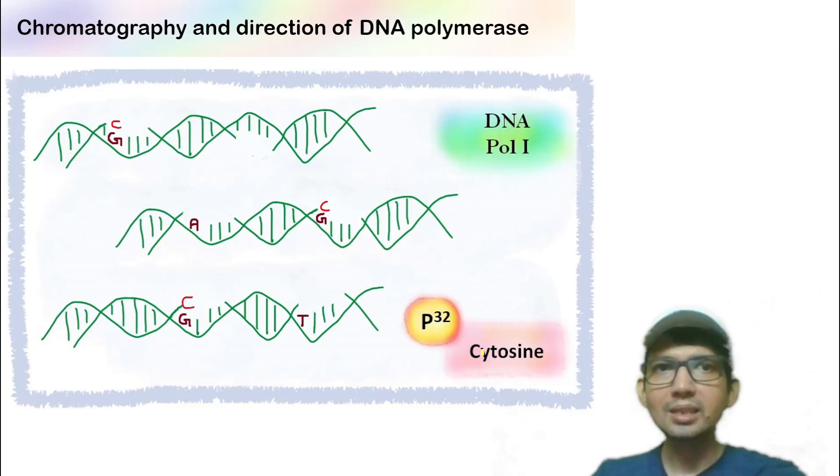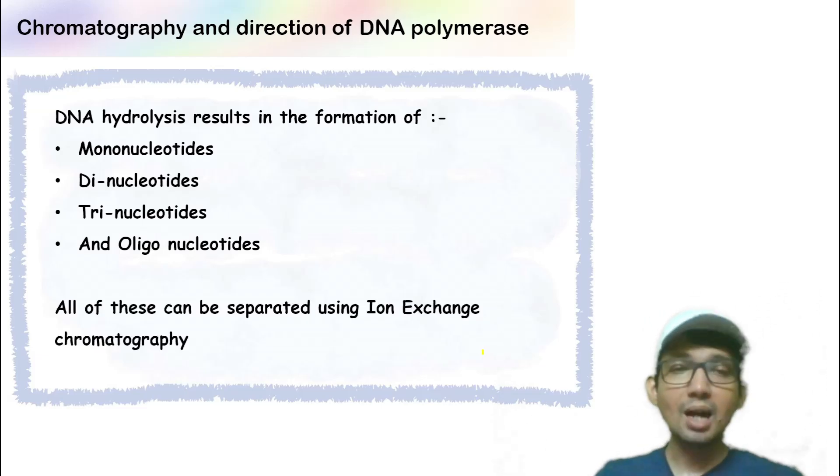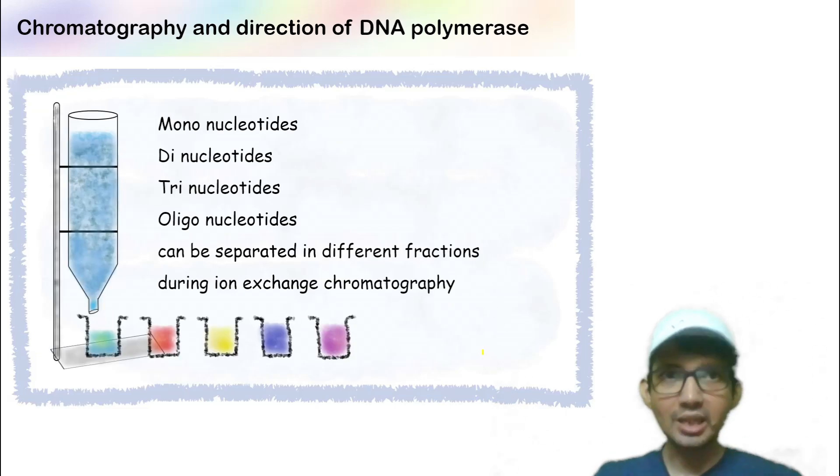Once cytosine is allowed to be added, the DNA is hydrolyzed. The DNA hydrolysis results in formation of mononucleotides, dinucleotides, trinucleotides, and oligonucleotides. All these can be separated using ion exchange chromatography. During ion exchange chromatography, when you collect fractions, you can elute out mononucleotides, dinucleotides, trinucleotides, and oligonucleotides.